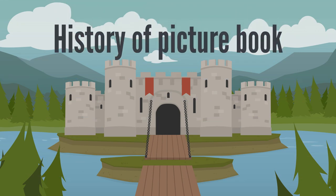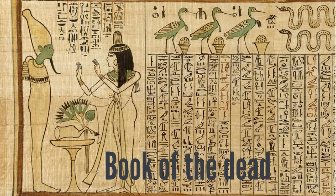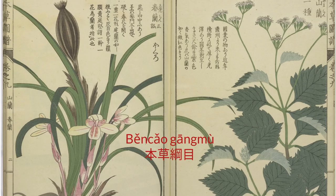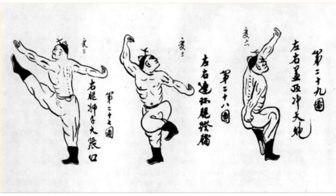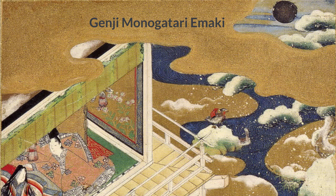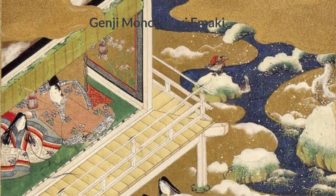History of picture books. The Book of the Dead in the ancient Egyptian pyramids is considered one of the oldest picture books. The Chinese Bencao Gangmu is a picture book about herbal medicine. The Chinese Kung Fu is recorded in Kung Fu picture books. The great Japanese Genji Monogatari Emaki is a series of picture books.